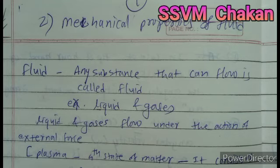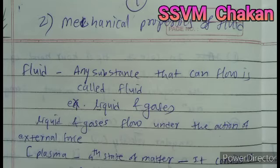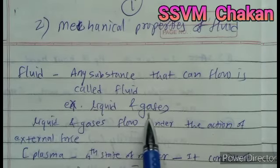What is a fluid? Any substance that can be flowed is called a fluid, just like water. If you add water on an inclined plane, the water starts flowing in the downward direction. Or if you add some drops of milk on any inclined surface, that milk starts flowing downward. Liquid and gases are examples of fluids.